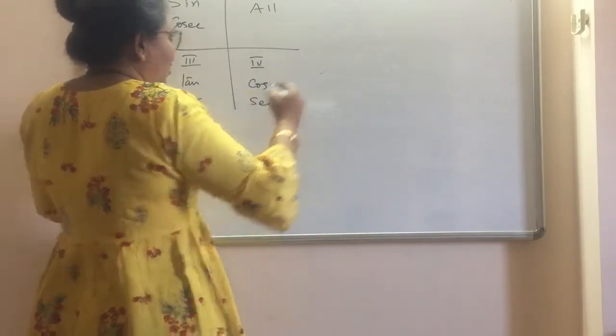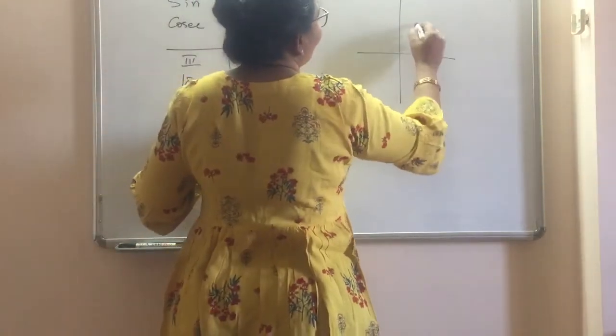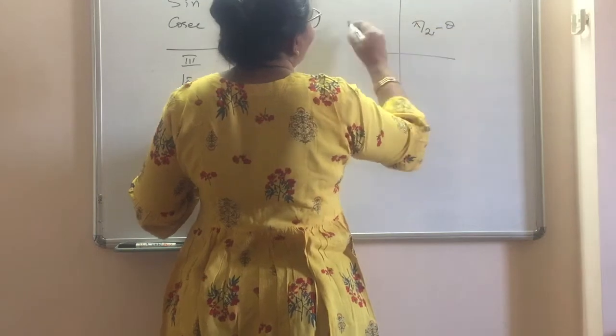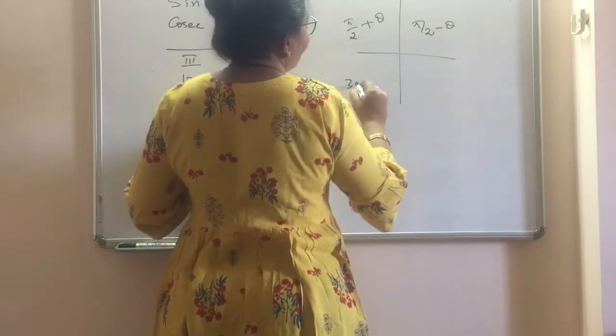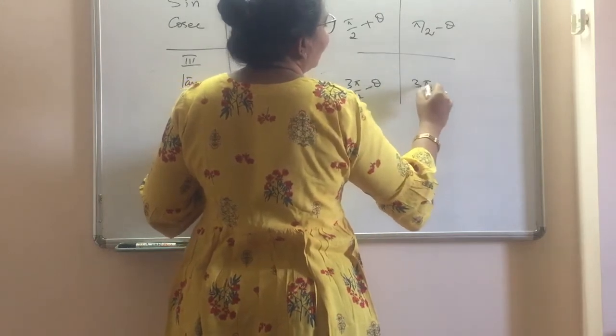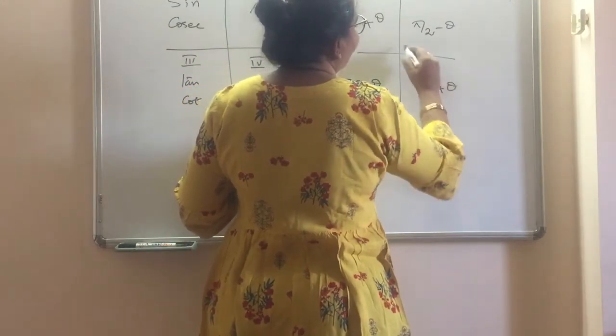You must know this table also: the pi by 2 table and pi table. Pi by 2 minus theta, pi by 2 plus theta, 3 pi by 2 minus theta, 3 pi by 2 plus theta. Like this we have done.